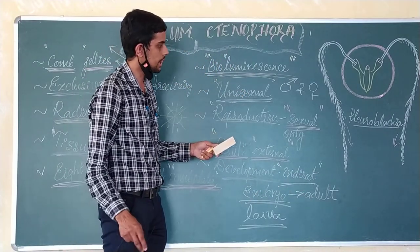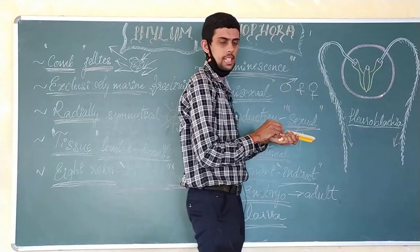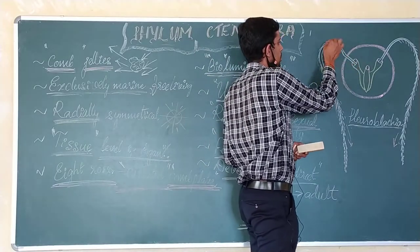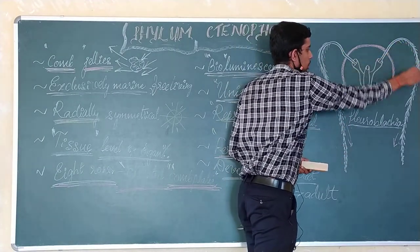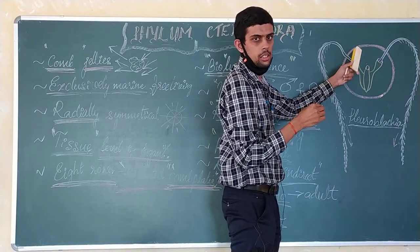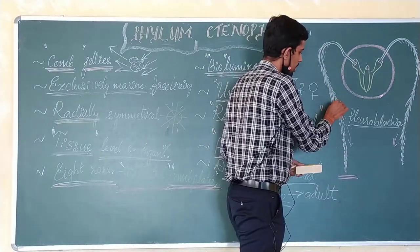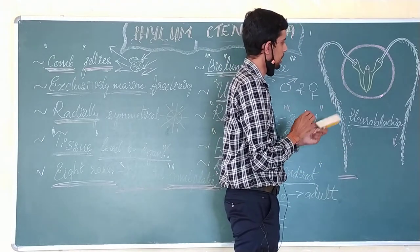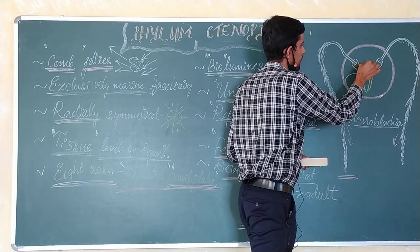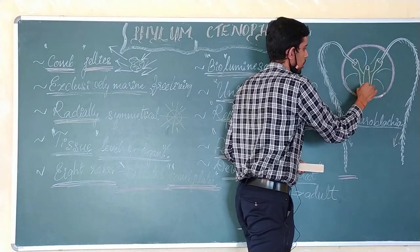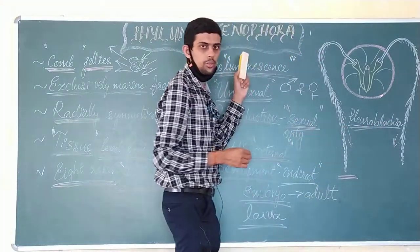One example for the phylum Tenophora is Pleurobrachia. This is a marine organism with eight comb plates covering the entire body — in the diagram we show only two. The comb plates help in locomotion, capturing food, and protection from predators. Numerous striations are also visible on the outer surface.